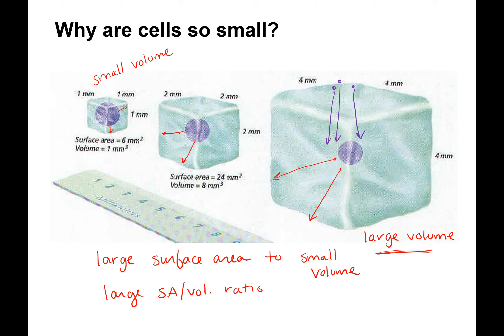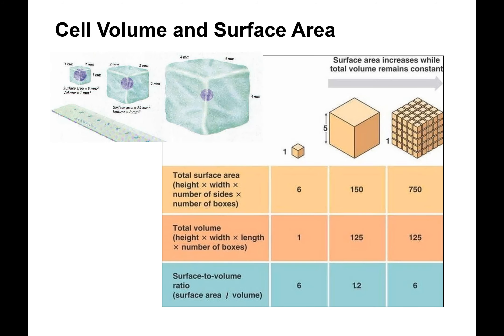And the smaller volume, the smaller distance for the molecules to move around in the cytosol. For me, this is hard to visualize, but if we look at this chart, I think it nicely explains it. So here we have this little one millimeter by one millimeter by one millimeter cell. And so its total surface area is 6 millimeters squared, and its volume is 1 millimeter cubed.